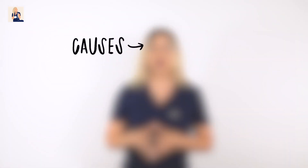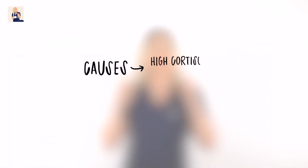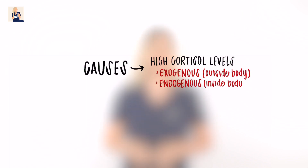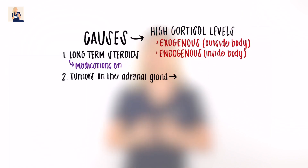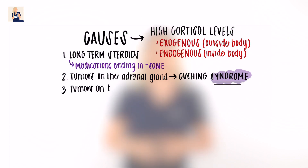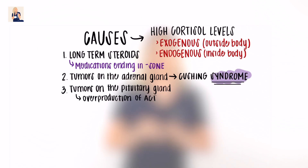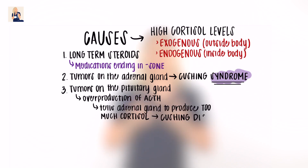Now, why would someone be diagnosed with Cushing syndrome? Cushing syndrome occurs when the body is exposed to high levels of cortisol from exogenous or endogenous factors. The most common cause is long-term steroid use. A little tidbit of knowledge: if the cause is a tumor on the pituitary gland that causes overproduction of ACTH, we call this Cushing's disease.